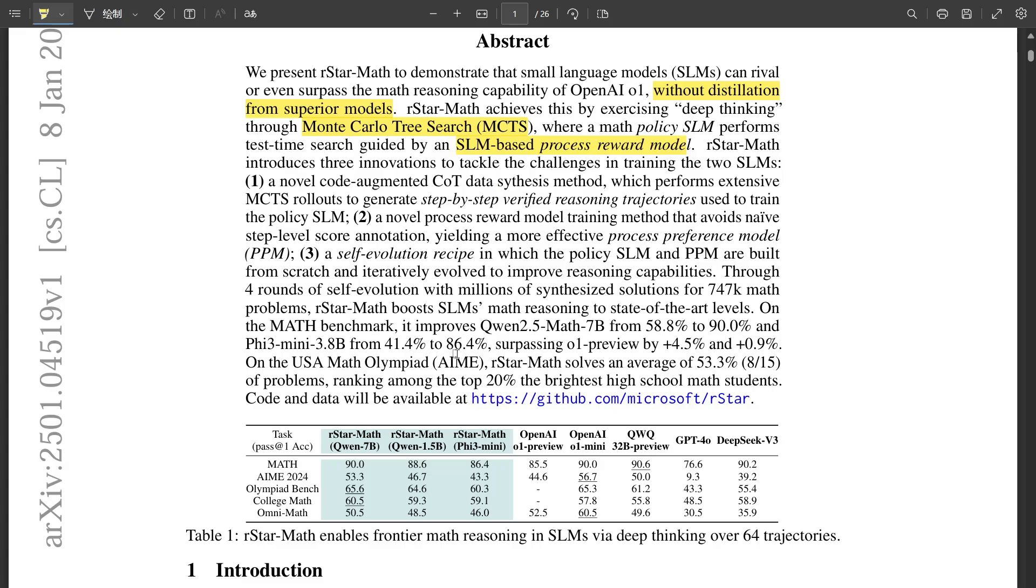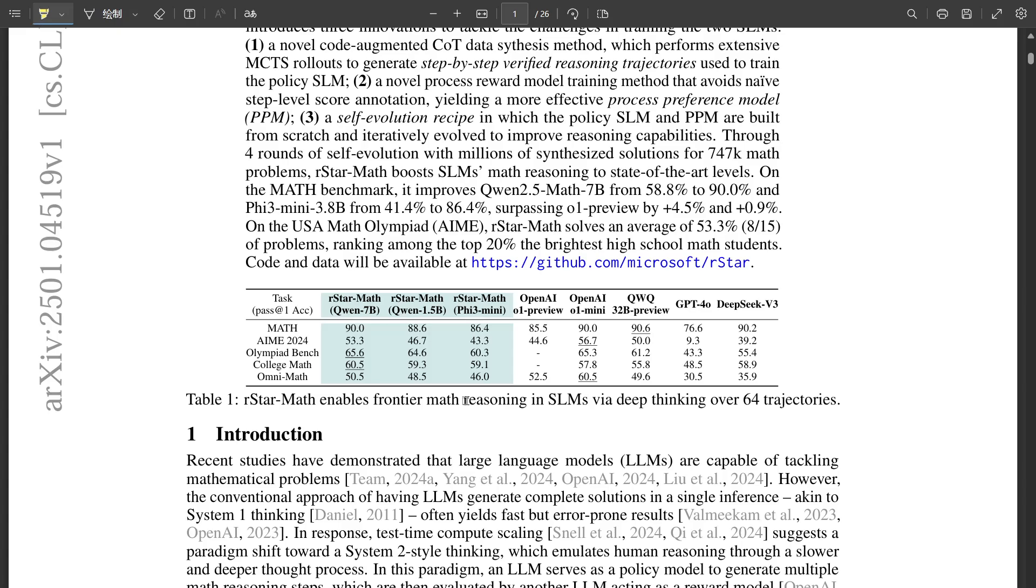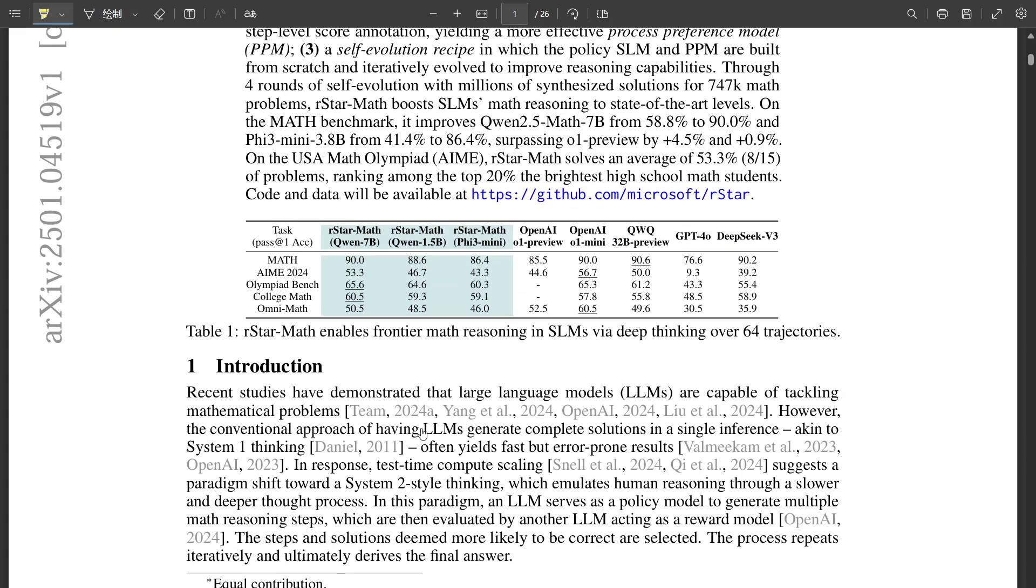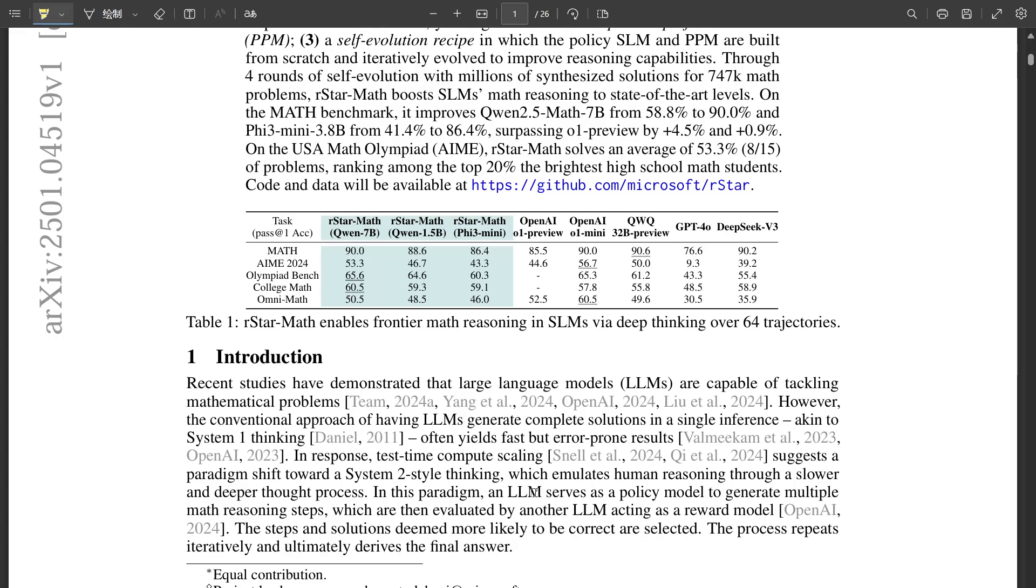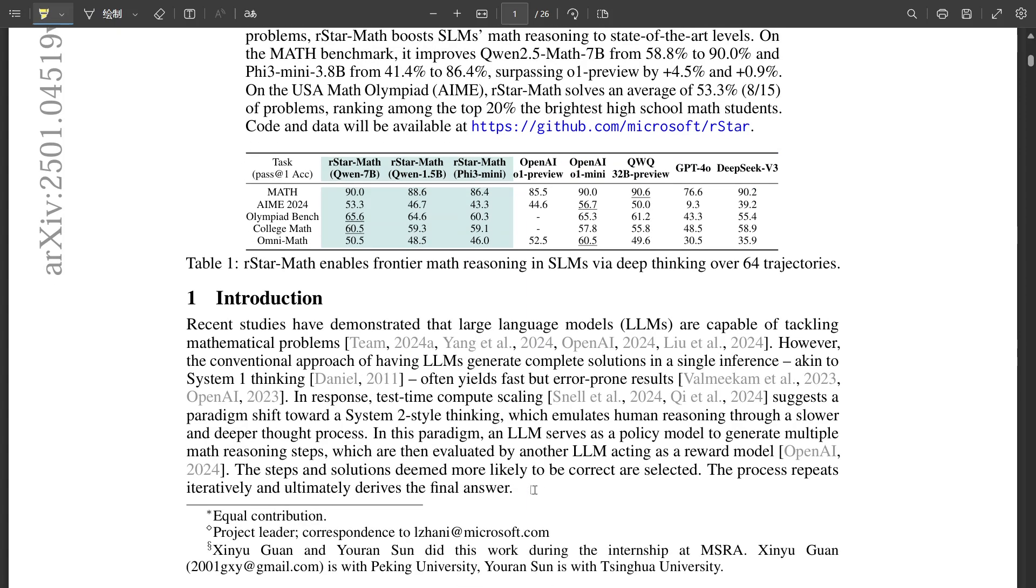So R-Star Math tackles this challenge by drawing inspiration from the way humans think. It incorporates those concepts like System 1 and System 2 thinking. Psychologists use these terms to describe different modes of cognitive processing. Think of System 1 as your quick intuitive thinking. It's fast and automatic, but not always accurate. It's relying on your gut feeling.